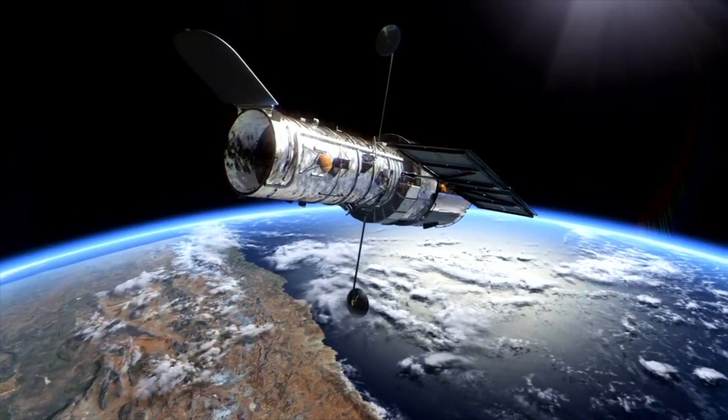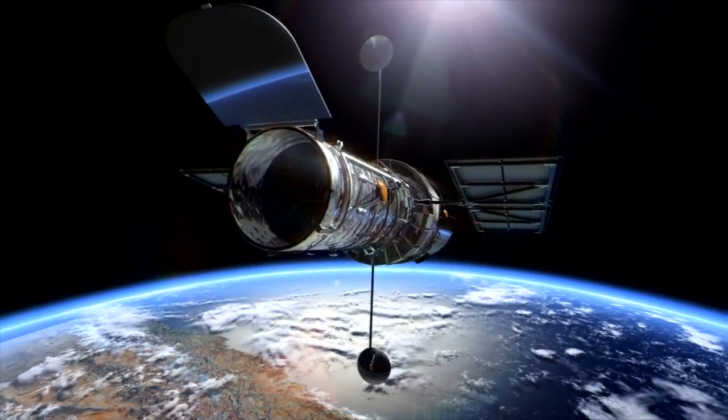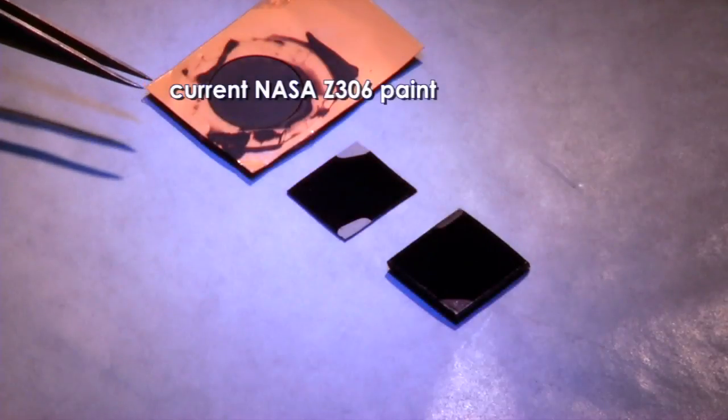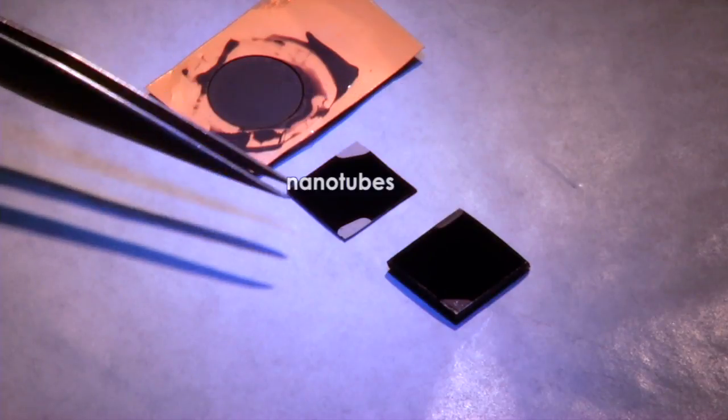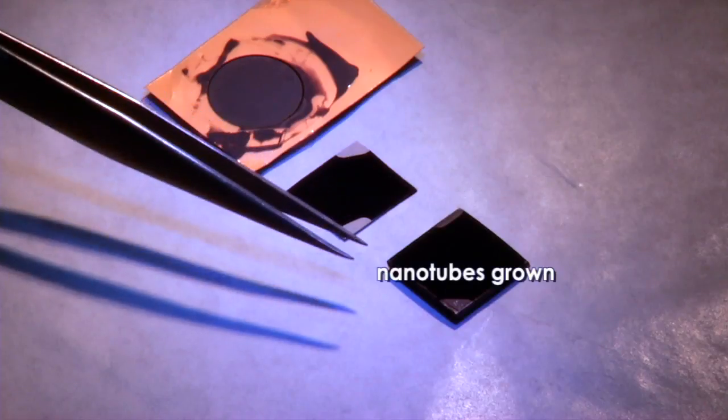One example where carbon nanotubes can enhance the performance of a scientific instrument in space is through their ability to absorb light. The Z306 paint is the blackest thing that we put on instruments right now. The fact that we're blacker than that makes us blacker than black in terms of performance.